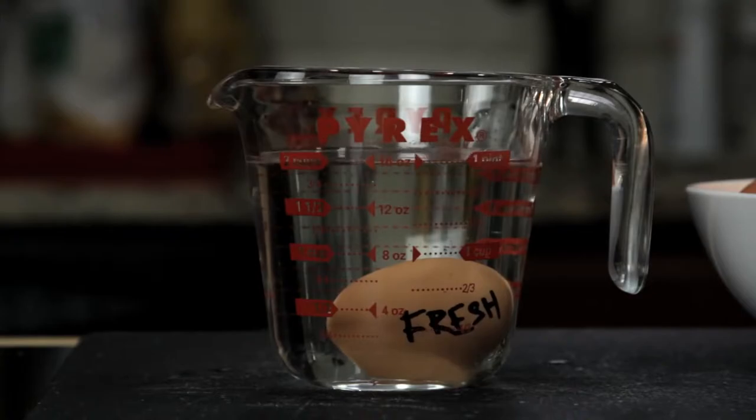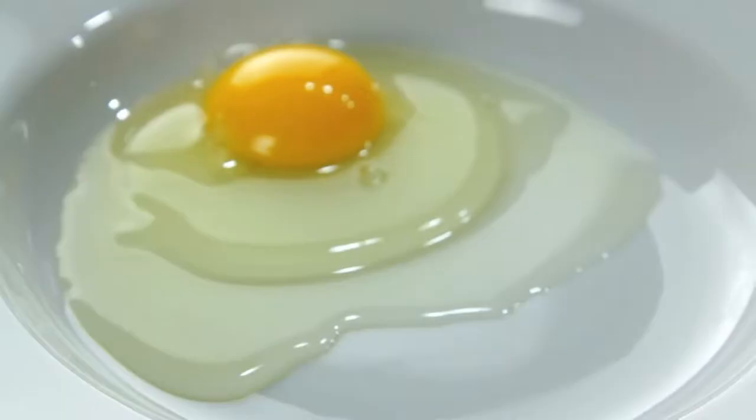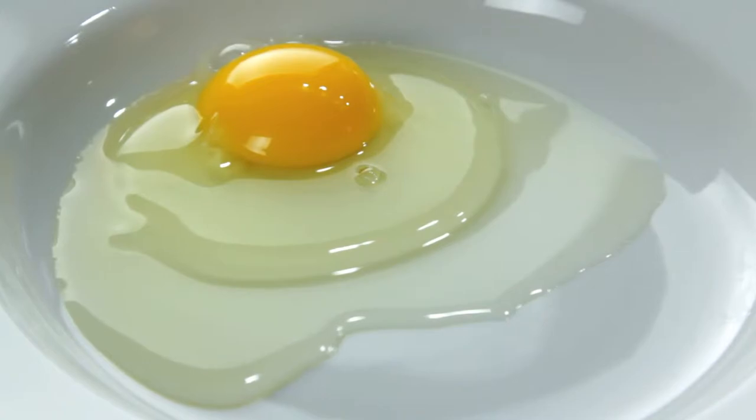Once you've got your fresh egg, the second tool you need is something that I saw first suggested by British chef Heston Blumenthal, a fine mesh strainer. You see, no matter how fresh your eggs are, there's always going to be some amount of liquid white. It's this excess white that causes misshapen eggs.